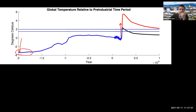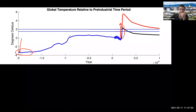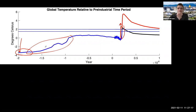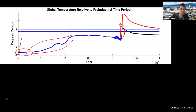Look at how steep this is compared to the past — it's about 10 times faster warming in this direction than that direction, even though the magnitude is about the same in terms of what we're talking about for future climate change.